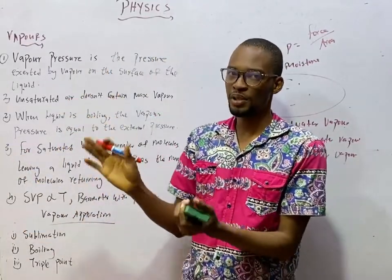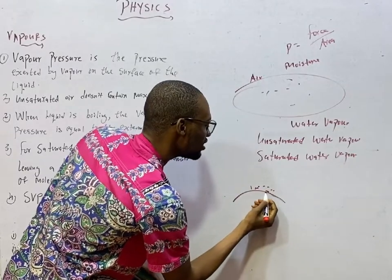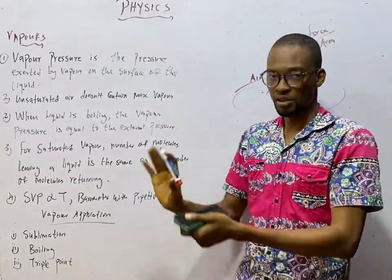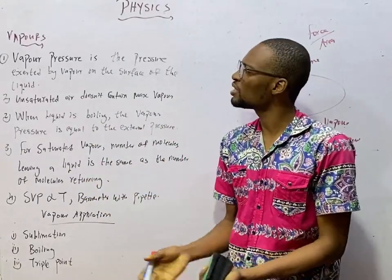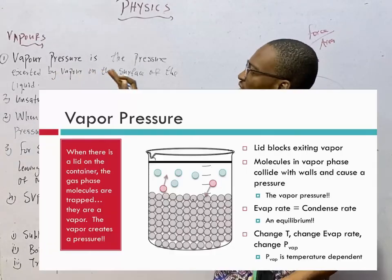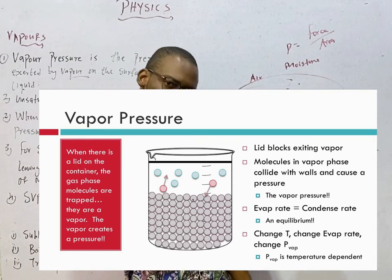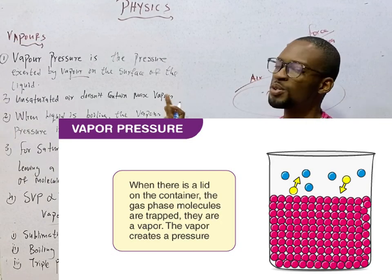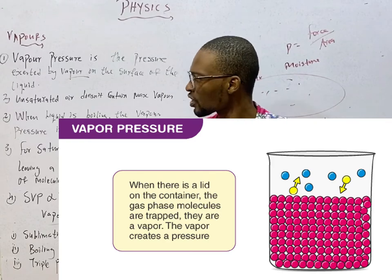Vapor also exerts pressure. When you are boiling water like this and you see water vapor coming up, this part of the water is still liquid, while here is vapor. This vapor applies pressure on the liquid part of the substance, not just for water, for all liquids generally. I am using water because it is a popular example and something you will see in your exam. Vapor pressure is the pressure exerted by vapor on the surface of the liquid. Unsaturated air does not contain maximum water vapor. By the time this air contains maximum water vapor, it becomes saturated air, just like solution in chemistry.